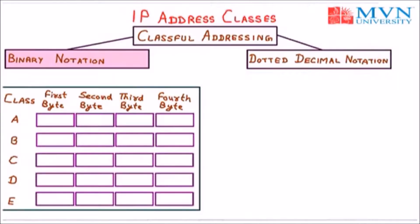In binary notation we discuss 0s and 1s. Whenever the first byte of any IP address starts with 0, that is called a class A IP. If the binary IP starts with 1 0, that represents class B. If it starts with 1 1 0, that means it is class C. If the IP is class D, it must start with 1 1 1 0. And if the IP address is class E, it will start with 1 1 1 1. These are the binary notation representations of IP address classes.